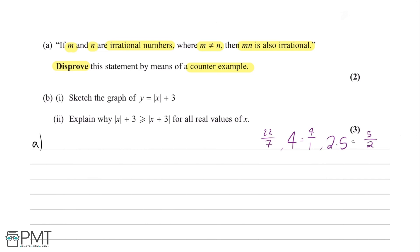Examples of irrational numbers would be something like pi, as it cannot be expressed as a fraction. Same with e, as it cannot be expressed as a fraction. And any surd you like — root 2, root 3 — all surds are also irrational numbers as they cannot be expressed as a fraction.